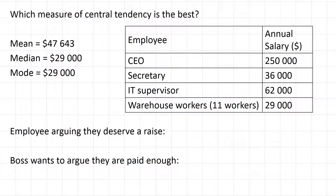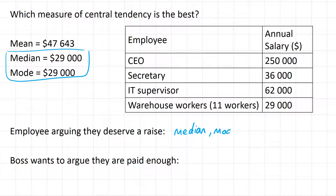We saw this example in an earlier video where the CEO's salary really brought the mean a whole lot higher. For an employee arguing that they deserve a raise, they'd probably want to use the median or the mode. They could say the salary in the middle of this company, or the most common salary, is less than $30,000 a year — we need raises. The boss who wants to argue that they're paid enough would maybe want to use the mean, because on average, everyone makes $47,000 a year.